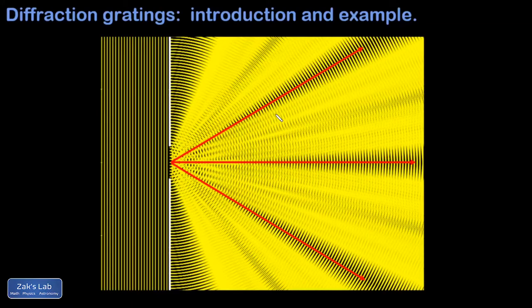This video gives a quick introduction to diffraction gratings, including the derivation of the formula for interference maxima. Then we show a couple of simple demonstrations, including one with laser light and one with white light. Finally, we wrap things up with an example of calculating the interference maxima for a couple of different wavelengths of light passing through a diffraction grating.